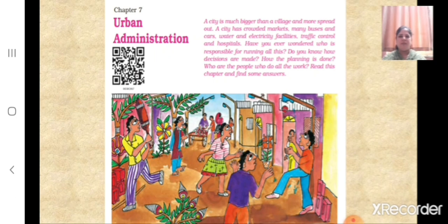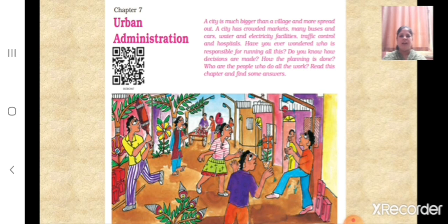We know that a city is much bigger than a village and more spread out. A city has crowded markets, many buses and cars, water and electricity facilities, traffic control, and hospitals. Have you ever wondered who is responsible for running all this? How are decisions made, how is planning done, and who are the people who do all this work? These services are run by the urban administration, decisions are taken by the urban administrative machinery, and the people who do this work are officers, officials, and elected representatives of the civic body.